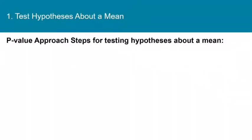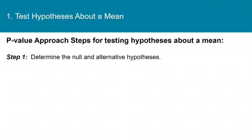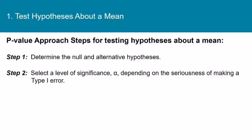Now that you've been introduced to the classical approach for hypothesis testing about a mean, let's look at the p-value approach. Here are the steps for using the p-value approach for testing hypotheses about a mean. Step one is to determine the null and alternative hypotheses. Step two is to select a level of significance, alpha, depending on the seriousness of making a type 1 error, just like the classical approach. For us in the textbook, alpha is always given to us.